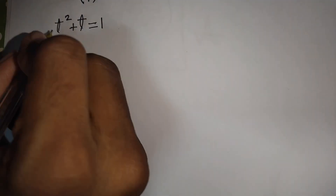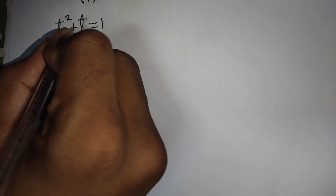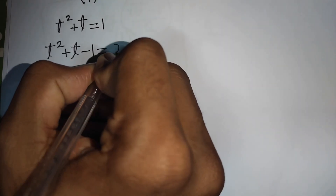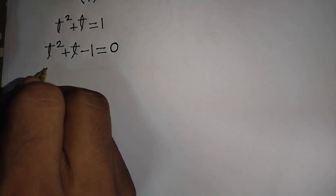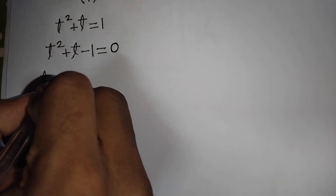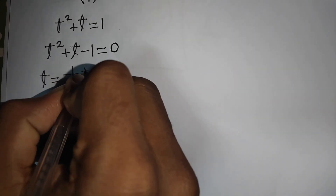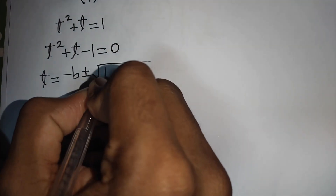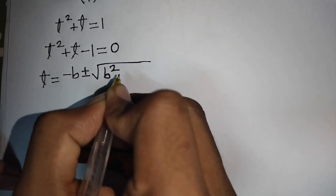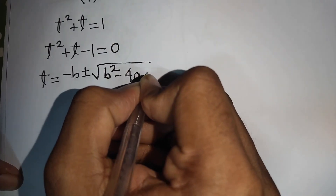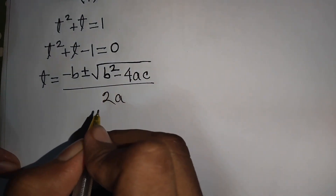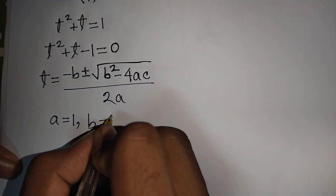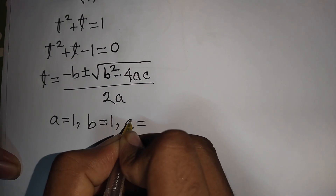We rewrite this as t squared plus t minus 1 equals 0. Now we apply the quadratic formula: t equals minus b plus or minus the square root of b squared minus 4ac, divided by 2a. Here a equals 1, b equals 1, and c equals minus 1.